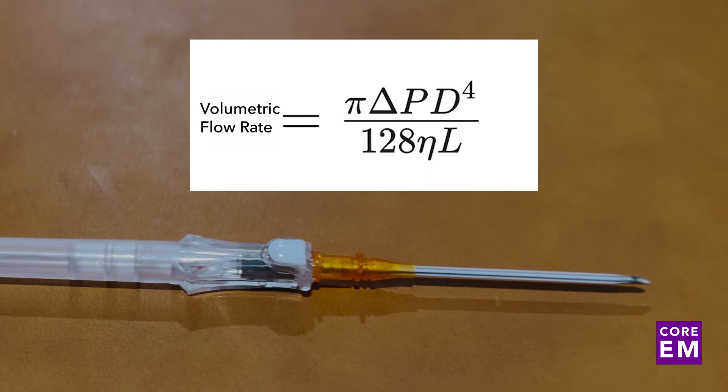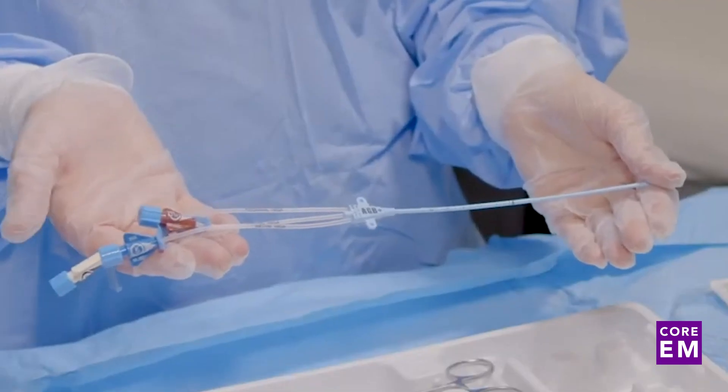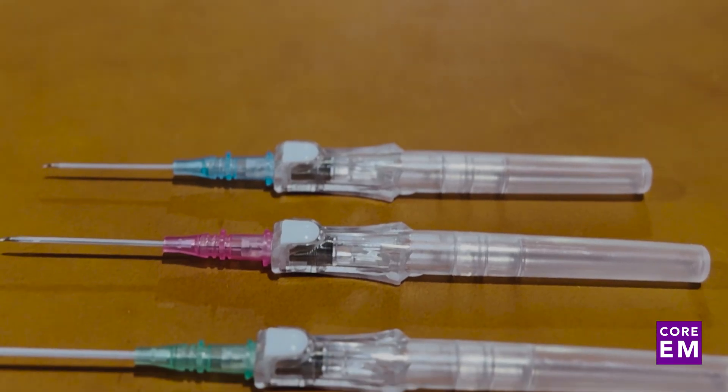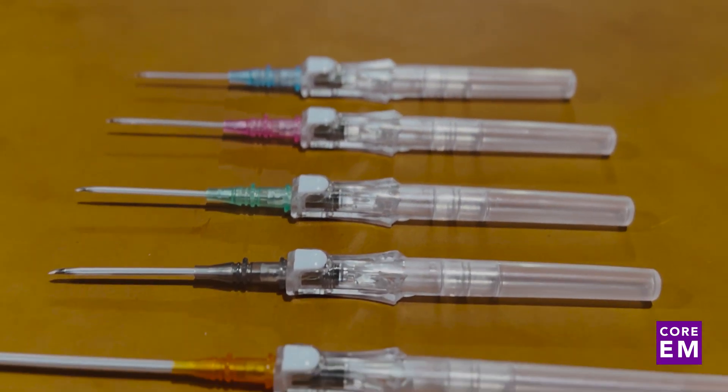And this is why, almost counterintuitively, bilateral peripheral 16 gauges are going to out-transfuse a cordis. This is also why a relatively long triple lumen catheter can restrict your maximum flow rate. It really all comes down to the diameter and the length.